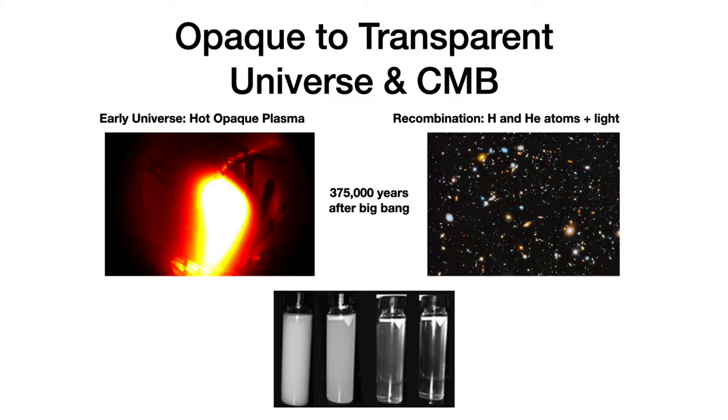Meanwhile, in a university not so far away, the Princeton team was hatching a plan. Dickey, Peebles, Roll and Wilkinson had a theory about the cosmic microwave background. Their theory was actually a rediscovery of earlier work by Gamow, Alpher and Herman.